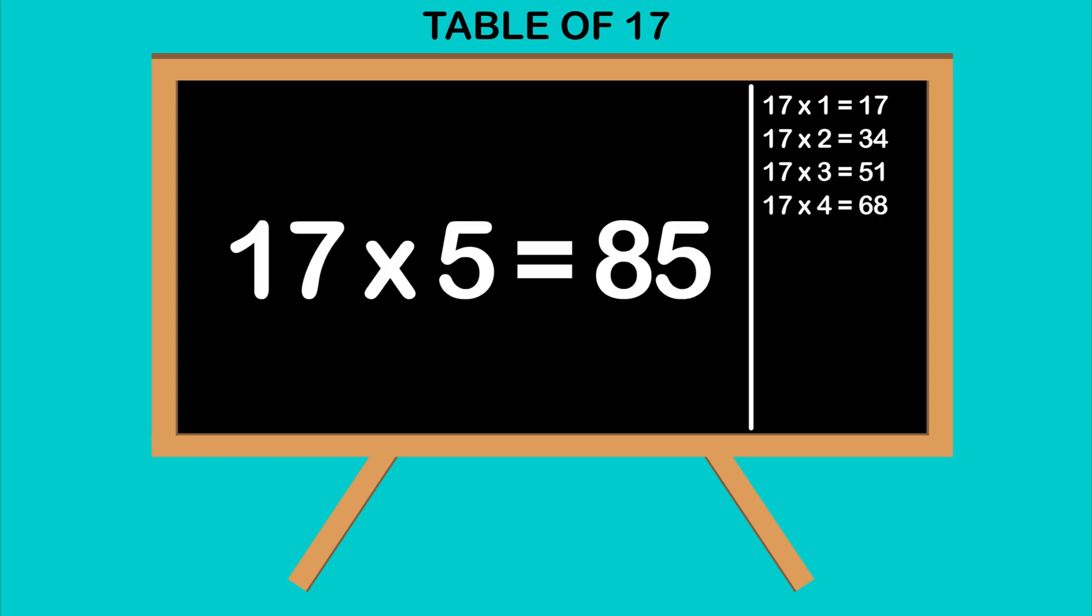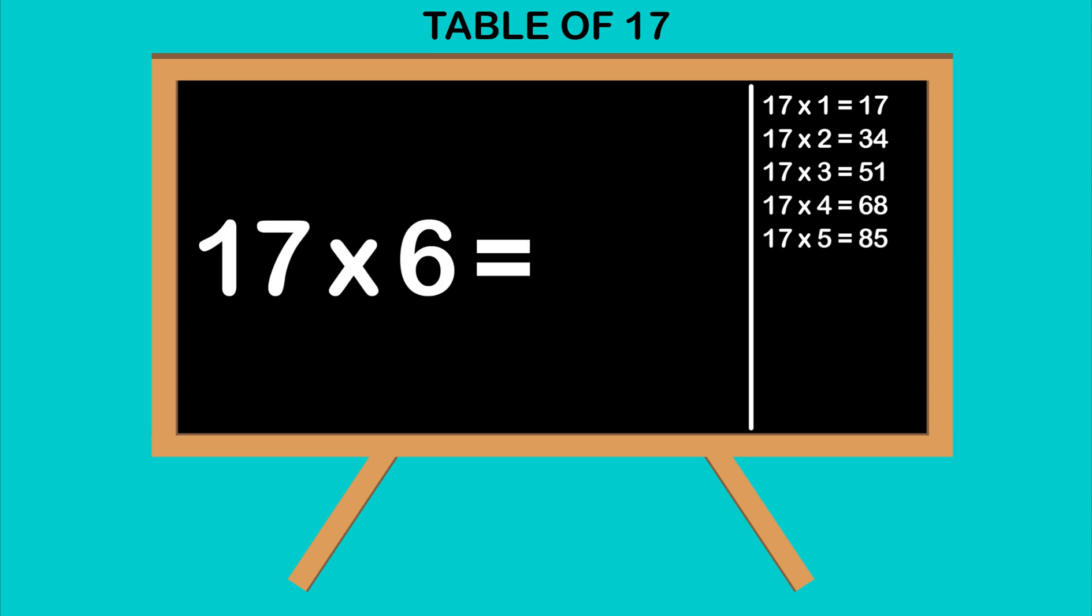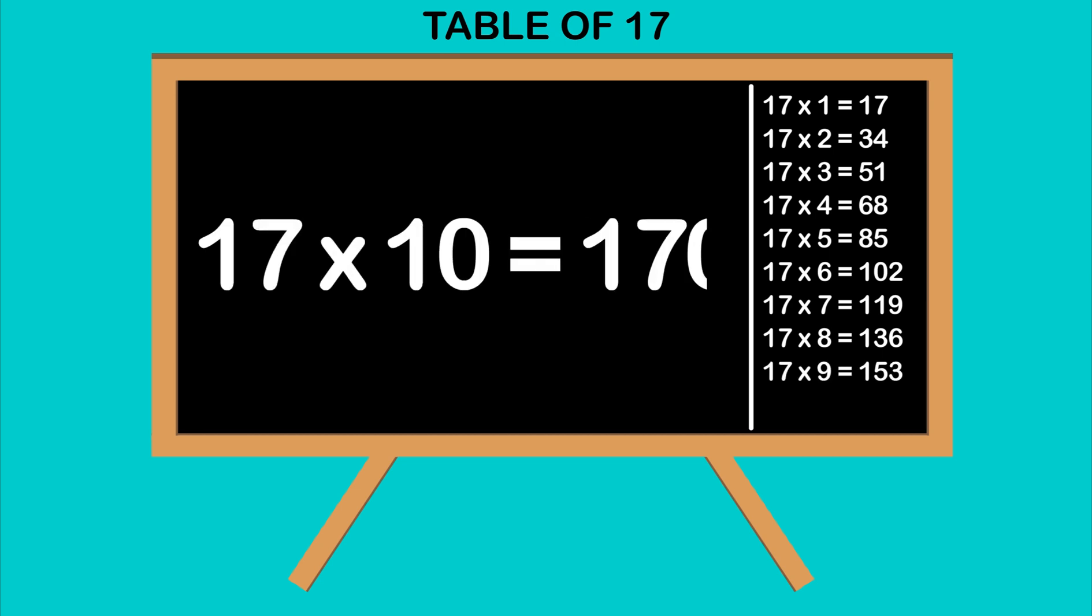17 fives are 85, 17 sixes are 102, 17 sevens are 119, 17 eights are 136, 17 nines are 153, 17 tens are 170.